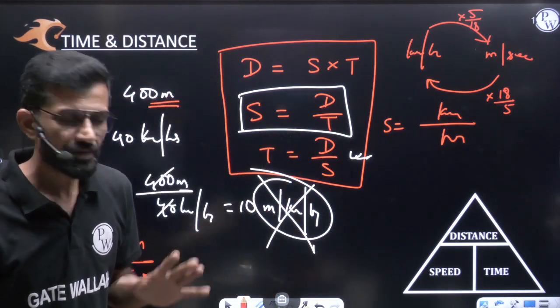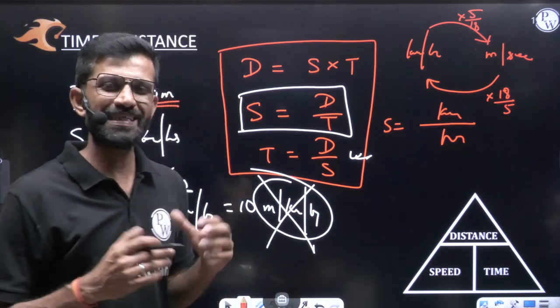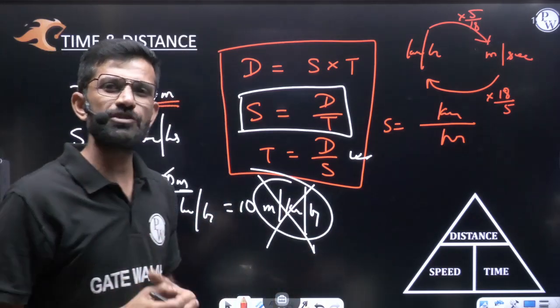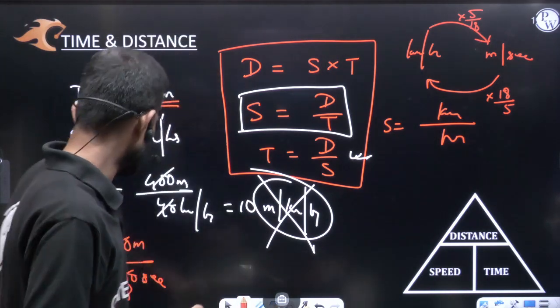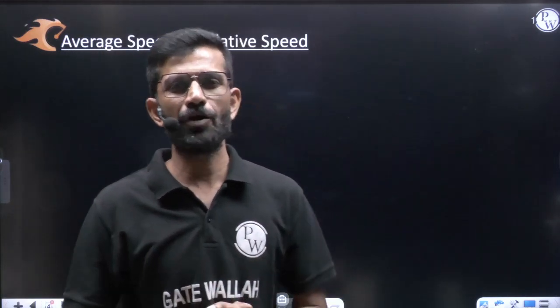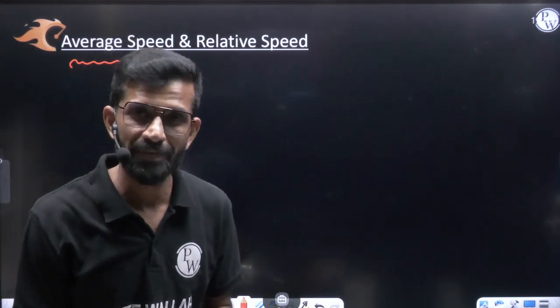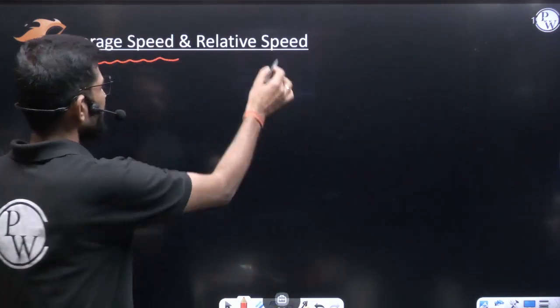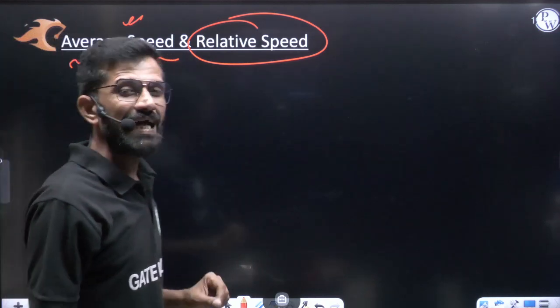Now moving to average speed. Is average speed simply the sum of observations divided by the number of observations? No. Average speed is not equal to sum of observations by number of observations. This should be very clear — we have discussed this in the averages topic. Relative speed we will also discuss through questions to make the concepts clearer.